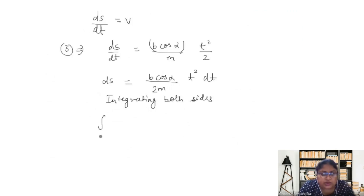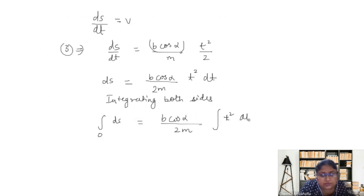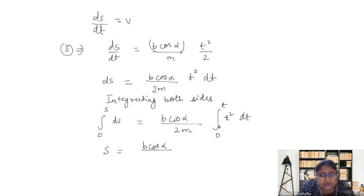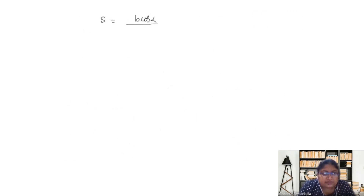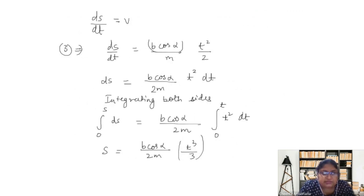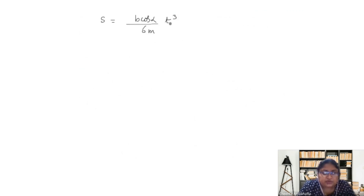At time t equals 0, the distance is 0, and at some later time t the distance is s. After integrating, s equals b cos alpha times t cubed over 3, which gives s equals b cos alpha divided by 6m times t cubed.